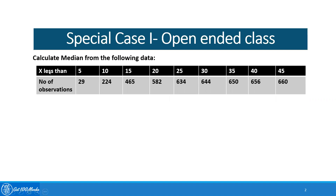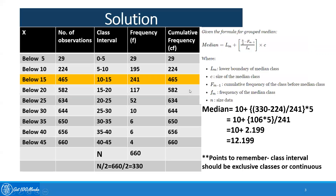For example, calculate the median from the following data. In this question, you see 'x less than 5' — the number of observations are given; 'x less than 10' — the number of observations are given; 'x less than 15' — 465, and so on. This is a kind of open-ended class. Let's see how to solve this kind of problem.